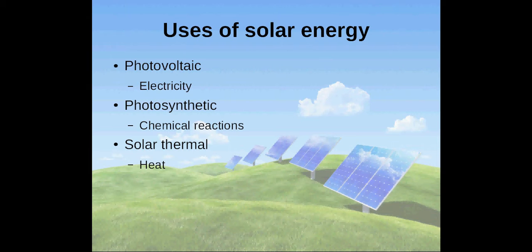Photovoltaic applications use sunlight to produce electricity. With photosynthesis, chemical reactions are induced by sunlight. In solar thermal processes, heat is used in various ways.